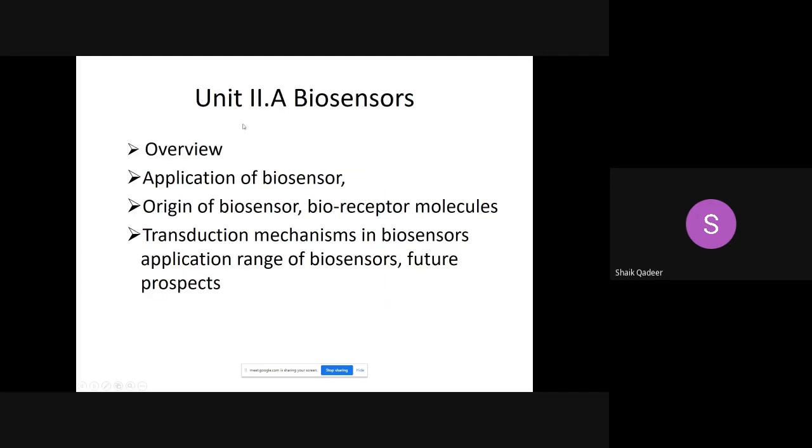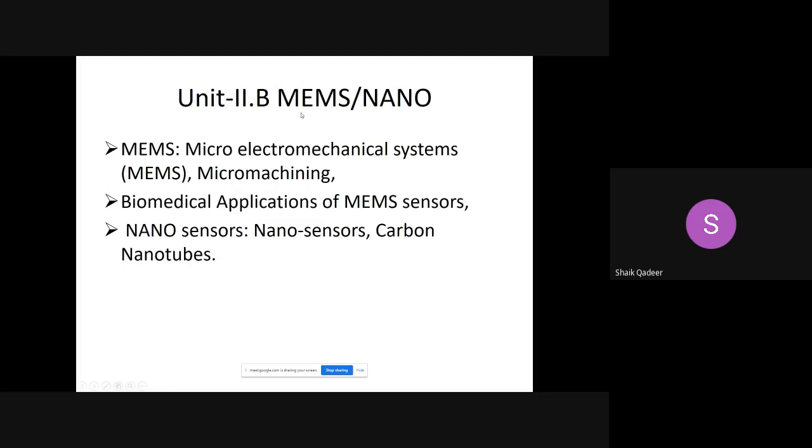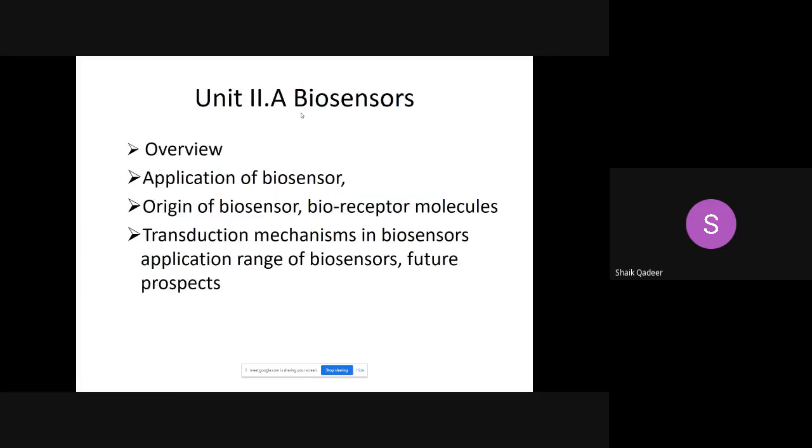The second unit contains two parts. First part title is biosensor, second part title is MEMS or nanosensors. In our first part, we study the different types of biosensors starting with the overview block diagram.